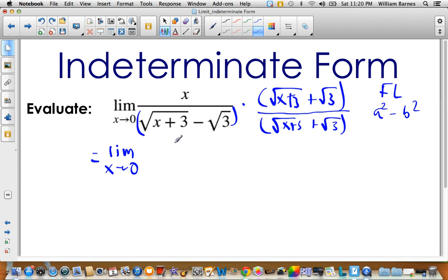So you get, on top, I'm just going to write my x, I'm not going to expand it. So x times (√(x+3) + √3). And then on the bottom, I'm going to use my FL, my first and last, or my a² - b². So I square this, √(x+3) squared, it's just x+3. Subtract, and then the √3 squared is 3. So that's what I would get.